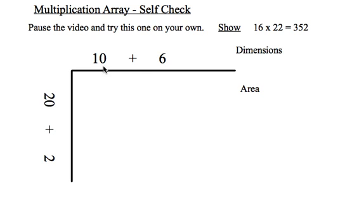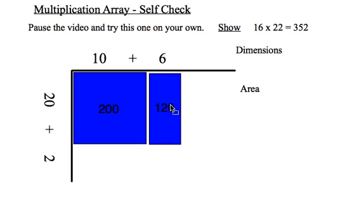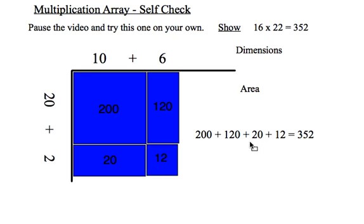All right, I broke mine up into 10 plus 6 to represent the 16, and 20 plus 2 to represent the 22. So 20 times 10 is 200. 20 times 6 is 120. 2 times 10 is 20. And lastly, 2 times 6 is 12. When I add all of those up, I get the same result of 352.